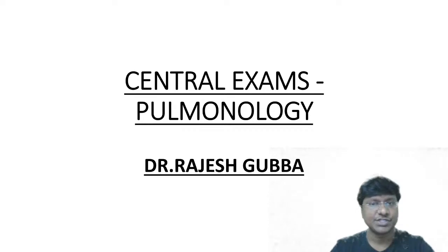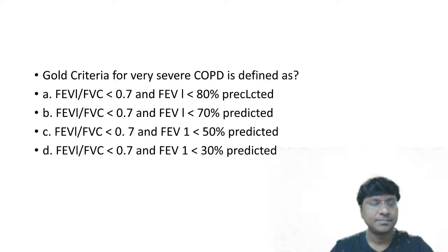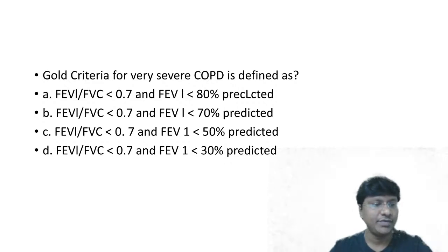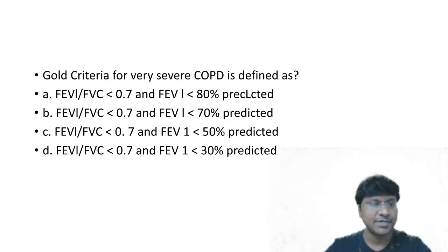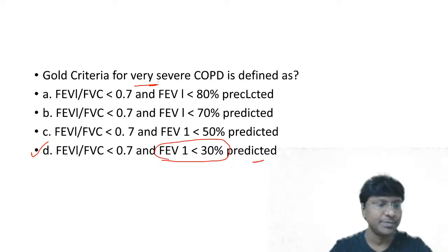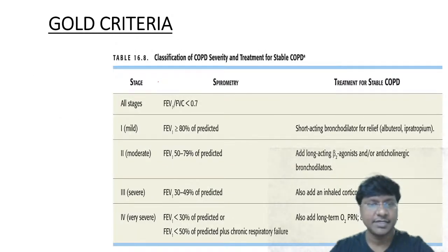The first question is related to COPD - the GOLD criteria. GOLD criteria for very severe COPD is defined as FEV1/FVC less than 0.7 and FEV1 less than what percent - less than 80%, less than 70%, less than 50%, or less than 30%? The answer is D: FEV1 less than 30% is considered very severe COPD.